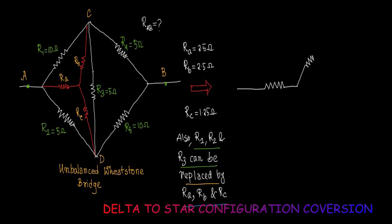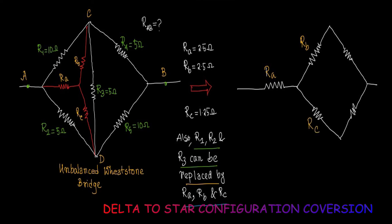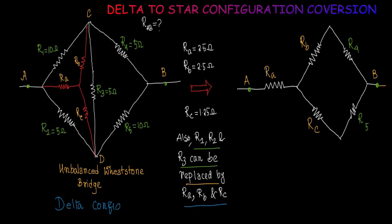Here we can draw Ra, Rb and Rc which are connected in star configuration between the points A, C, D in place of R1, R2 and R3. Then we consider the resistors R4 and R5 — Ra, Rb and Rc in star configuration will be connected with the other resistors R4 and R5 between the two points A and B.